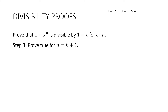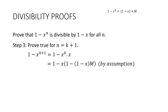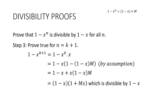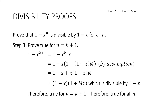Step three: prove true for n equals k plus one. Start with one take away x to the k plus one. Split that up into x to the k multiplied by x, because I want to substitute for x to the k. So x to the k equals one take away one minus x times m. Substituting that in and expanding gives one take away x plus x multiplied by one minus x multiplied by m. There's a common factor of one minus x, so factoring that out gives one plus mx in the second bracket, which is divisible by one minus x because one plus mx is an integer. Therefore it's true for n equals k plus one, therefore it's true for all n.